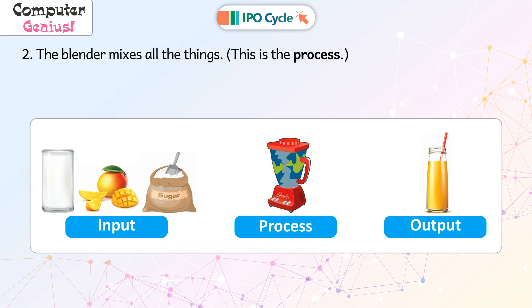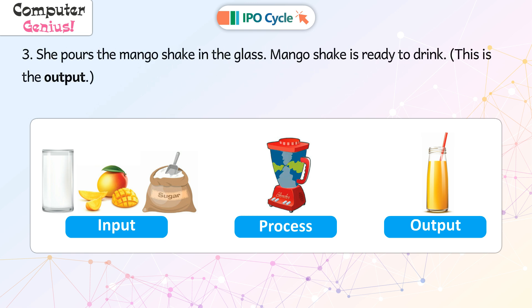The blender mixes all the things. This is the process. She pours the mango shake in the glass. Mango shake is ready to drink. This is the output.